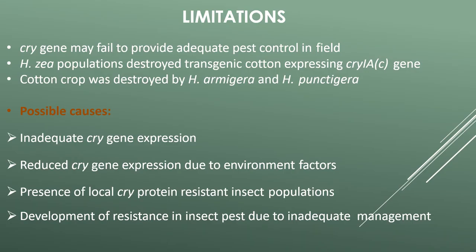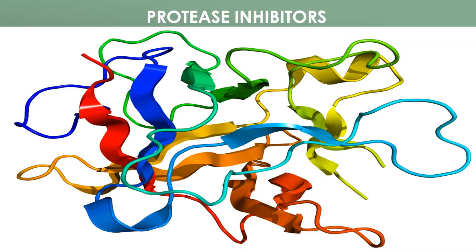This is the list of Bt-expressing transgenic crops. Limitations include inadequate or reduced cry gene expression due to environmental factors, presence of local cry-protein-resistant insect populations, and development of resistance in insect pests due to inadequate management.